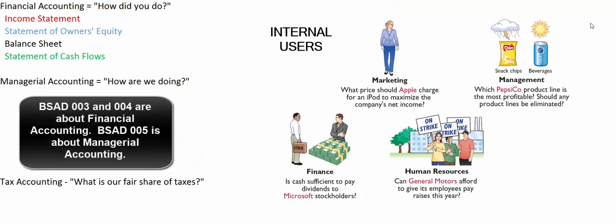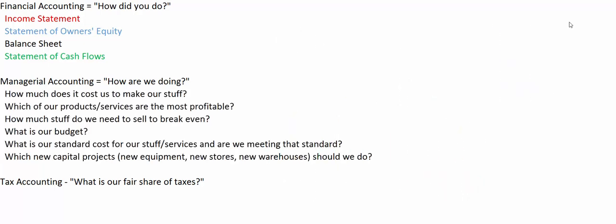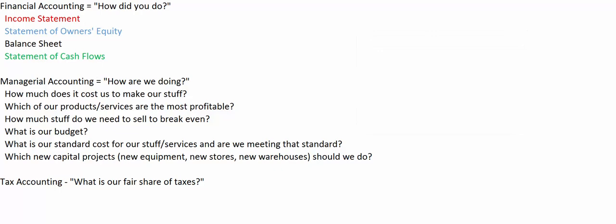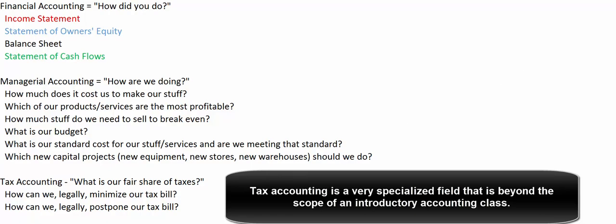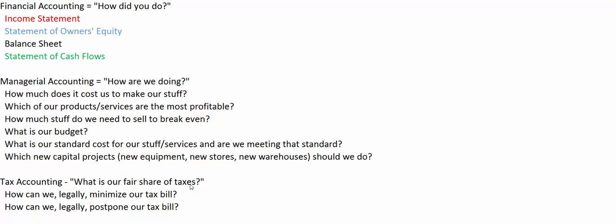The second general area is managerial accounting — we'll talk about that a lot later. It answers the question: how are we doing? We answer questions for internal users like how much should we charge for our product, and which products are making the most money. We can't answer those questions until we understand financial accounting, so we'll start there. Tax accounting, which we won't cover, answers the question: what is our fair share of taxes? How can we legally minimize or postpone our tax bill?